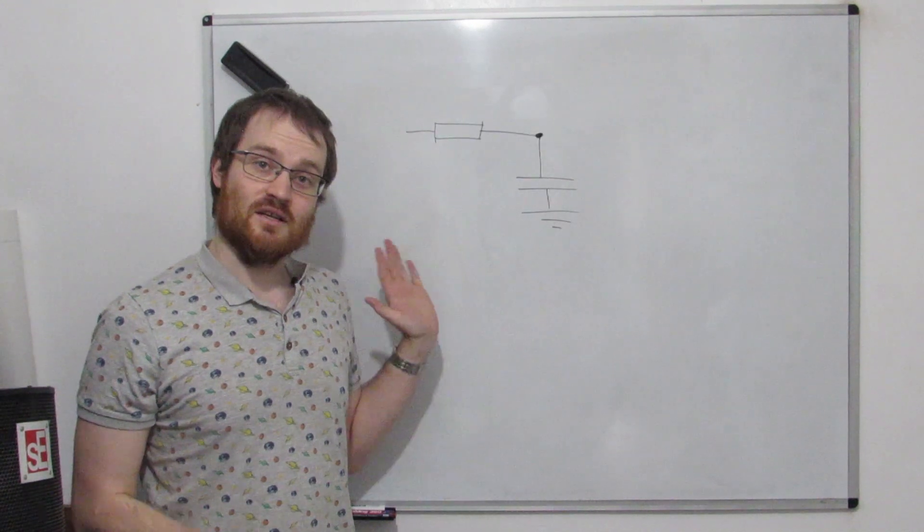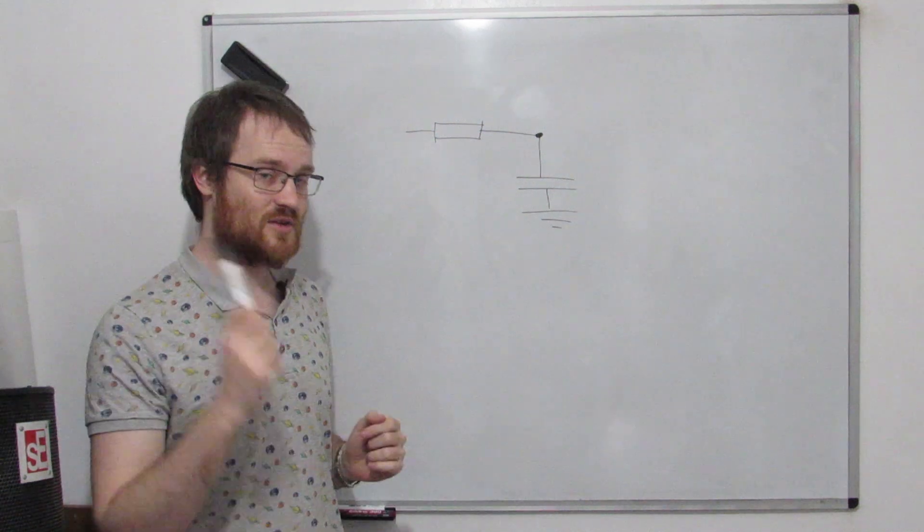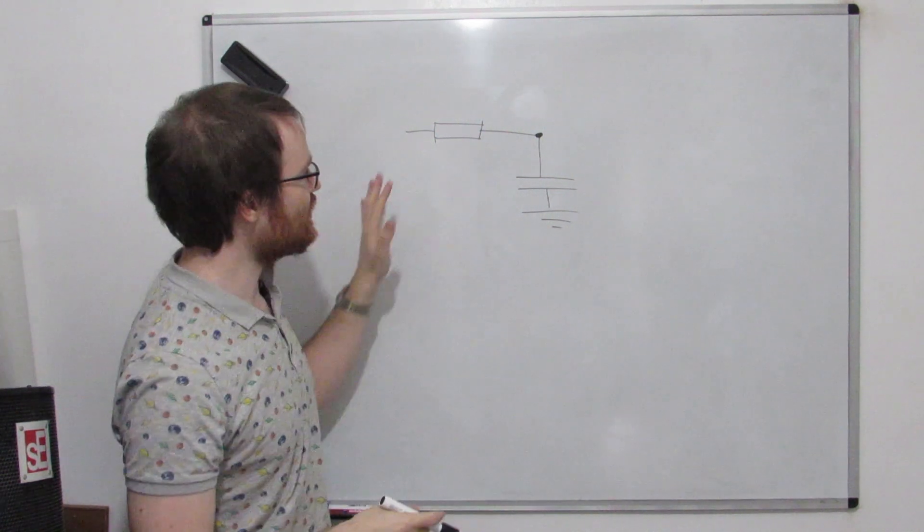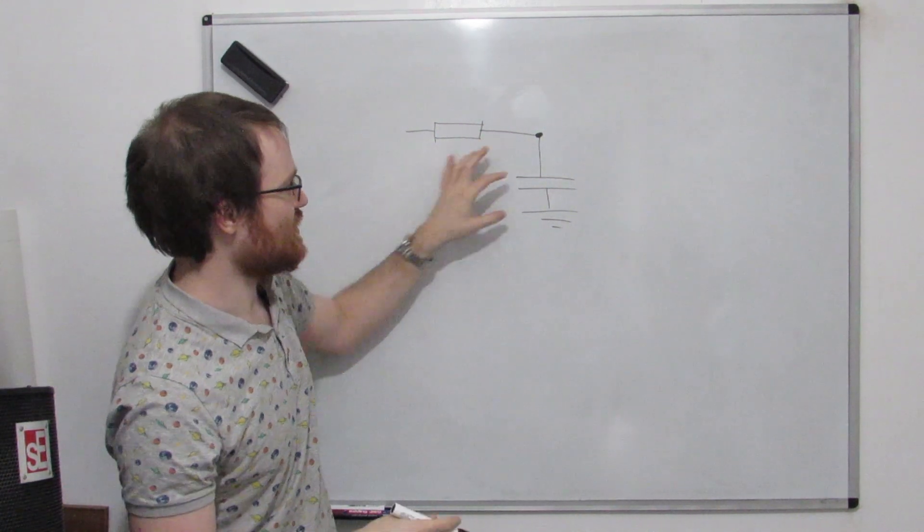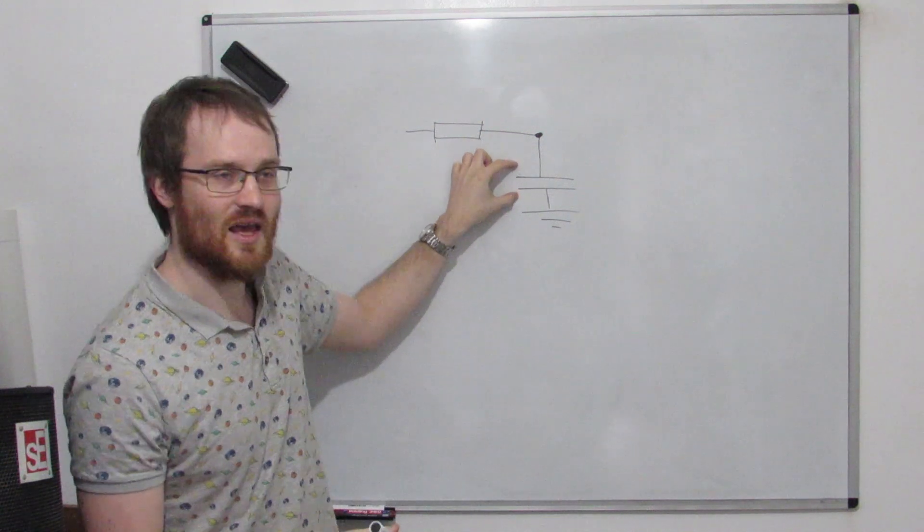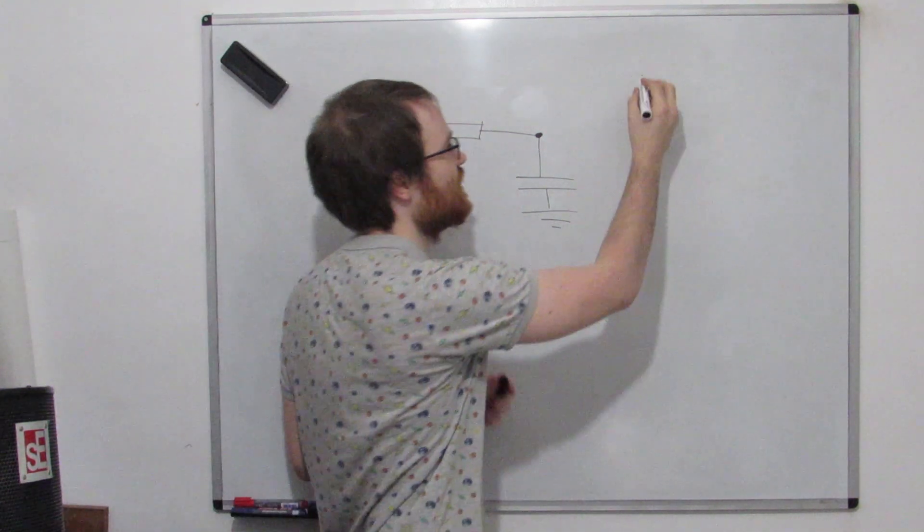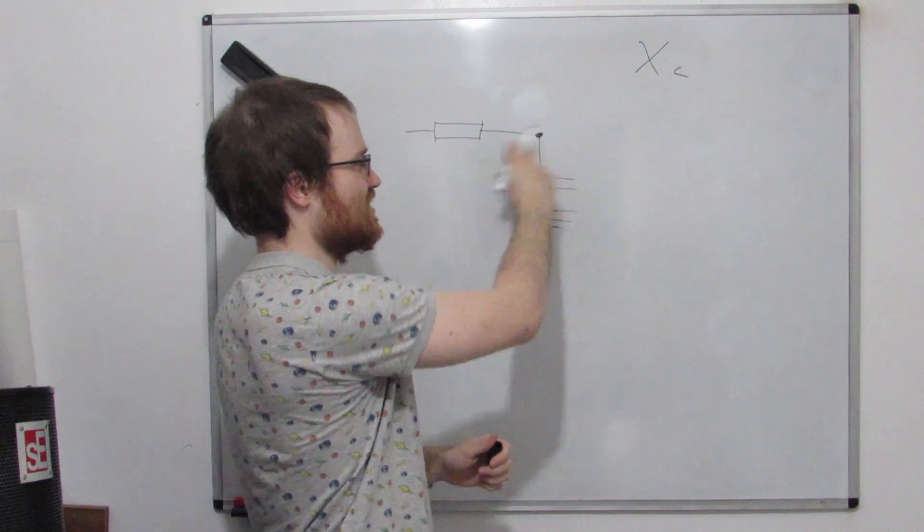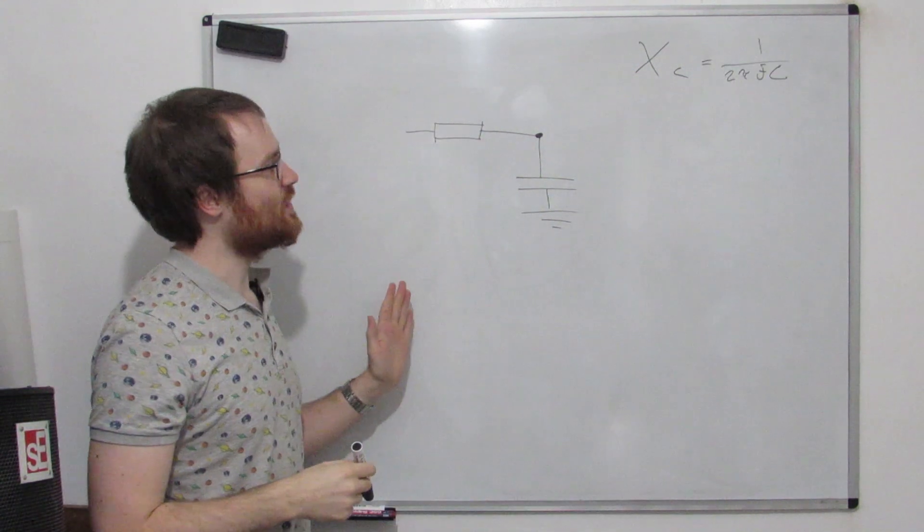So we know this as a low pass filter. If you haven't seen my circuits 101 video I spoke about this type of circuit. You can look at it as a voltage divider with this resistance here being dependent on the frequency with this equation. You can kind of think of that as the resistance of this capacitor. This is a low pass filter.